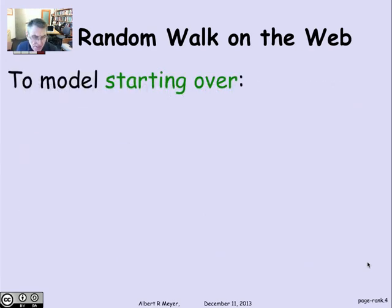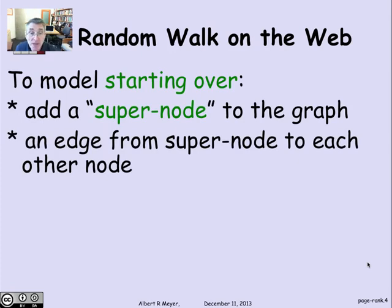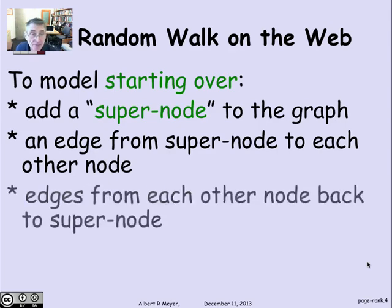Now to model this aspect that the users start over again, if they get bored or they get stuck, we can formally add to the digraph a hypothetical super node with the property that there's an edge from the super node to every other node with equal likelihood. So once you're at the super node, then following an edge is tantamount to saying pick a random page and start over again. To get to the super node, we have edges back from other nodes in the graph back to the super node.